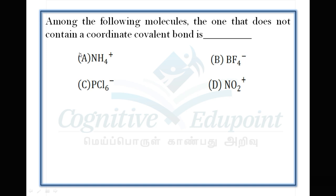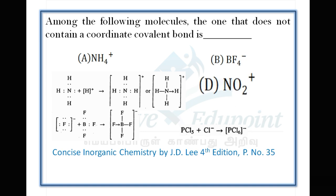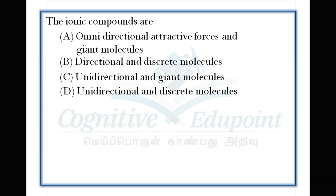Next question: Among the following molecules, the one that does not contain coordinate covalent bonds. Four different species: ammonium ion, BF4- ion, PCl6- ion, NO2+ ion. The ammonium ion has coordinate covalent bonds. BF4- also has coordinate covalent bonds. NO2+ does not have coordinate covalent bonds. Correct answer is NO2+, D.